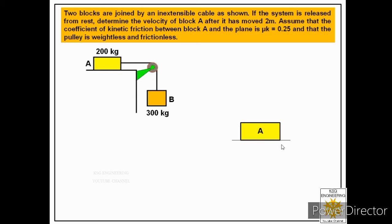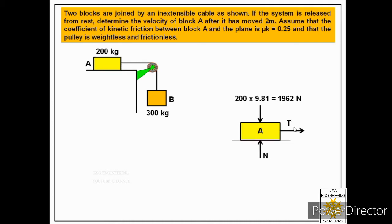In the free body of block A, the first force is its weight acting in the downward direction. The mass of block A is 200 kg, so multiplying by 9.81 gives a weight of 1962 N. We also show the normal pressure N acting from the ground, the tension T in the cable acting towards the right, and the friction force FA acting towards the left, since block A moves to the right.